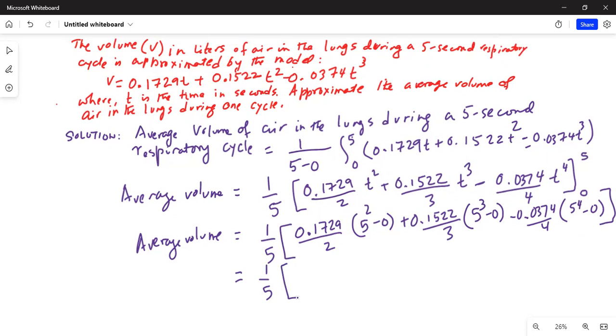So, this is 0.1729, the first term multiplied by 5 squared is 25 divided by 2 is 2.1613 plus 0.1522, 5 cubed is 125 divided by 3 is 6.3417 minus 0.0374. 4 times 5 to the power of 4 is 6.25 divided by 4 and that is minus 5.8438.